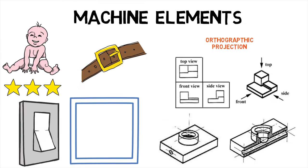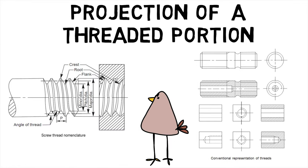Hence, we first saw what machine elements are and then went on to see how threaded parts are represented in sectional views.